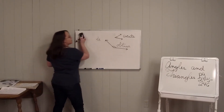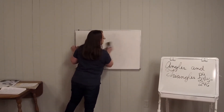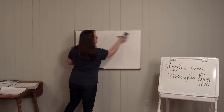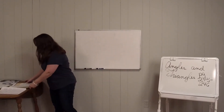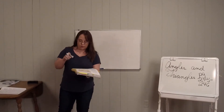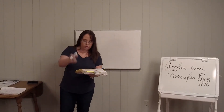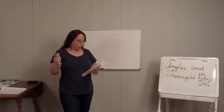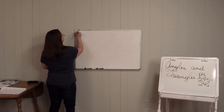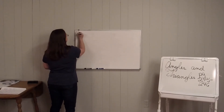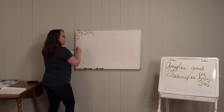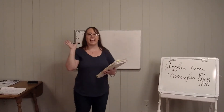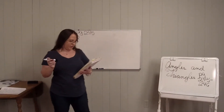So before we talk about the different types of triangles, we're just going to talk about those angles for a minute. I want you to look in your book on page 245. We're looking at number two, and we're just going to talk about the angles right now.